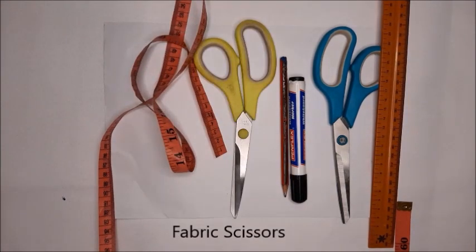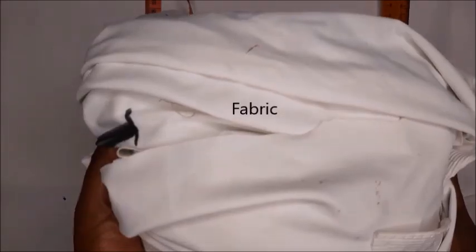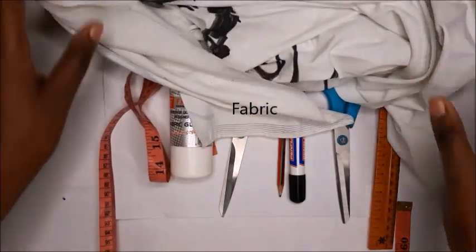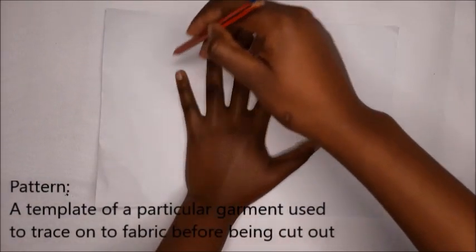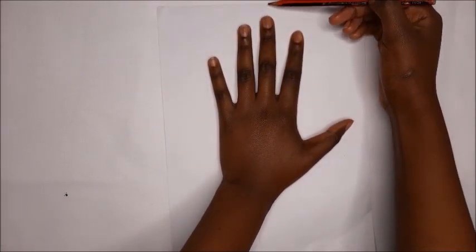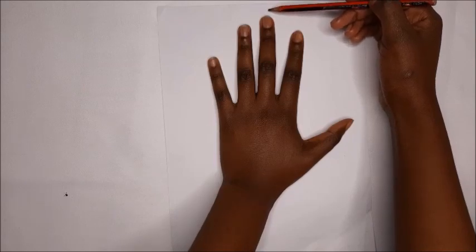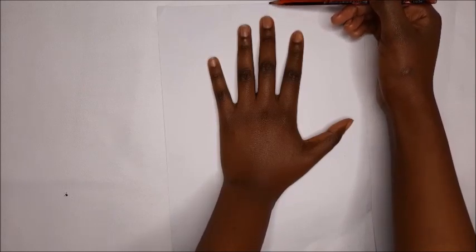We're going to be tracing our hand. Put your paper in portrait position and give yourself about two centimeters from the edge. Open up your fingers when tracing because you want to trace your hand really well. Mark where your wrist is, this is the starting point.